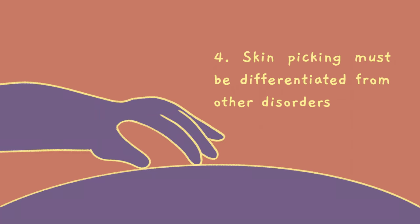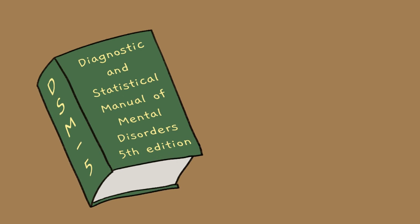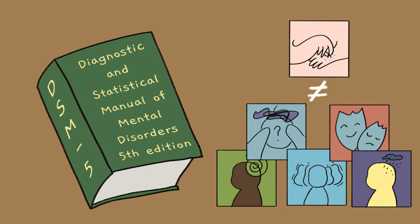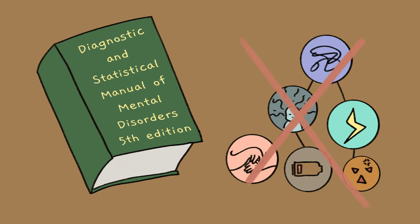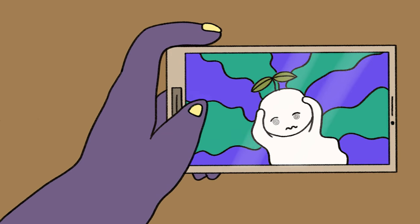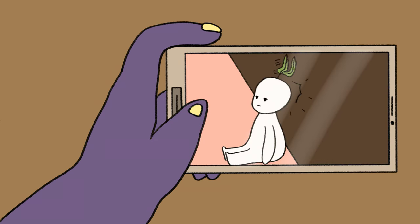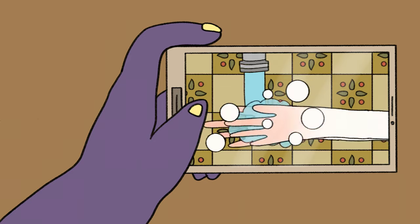Number four, skin picking must be differentiated from other disorders. A common criterion in the diagnosis of other disorders in the DSM is that the disorder should be distinctly different from other disorders. In this case, skin picking cannot be attributable to other disorders. In particular, skin picking disorder needs to be differentiated from other experiences such as delusions in a psychotic disorder, efforts to improve appearance in body dysmorphic disorder, stereotypes in stereotypic movement disorder, or obsessions and compulsions in OCD.